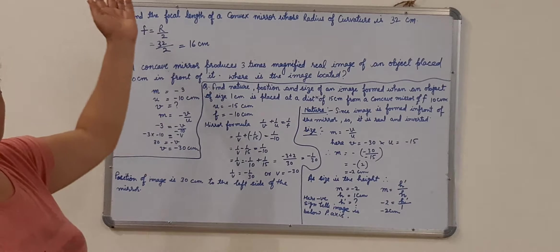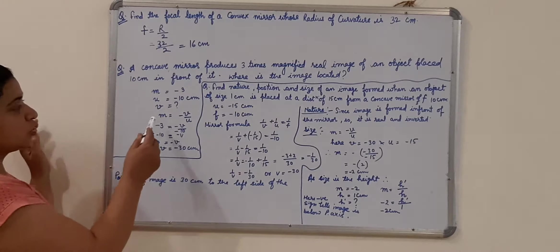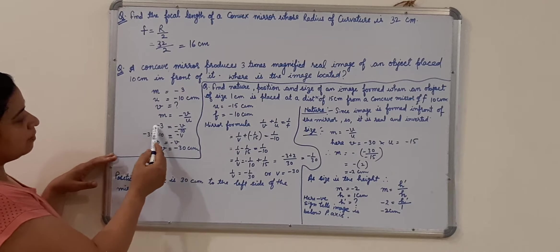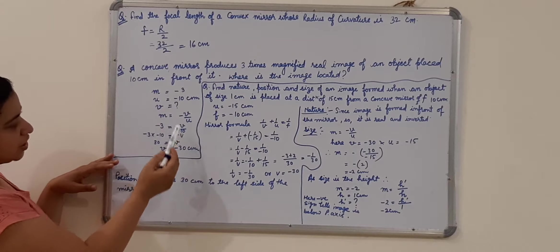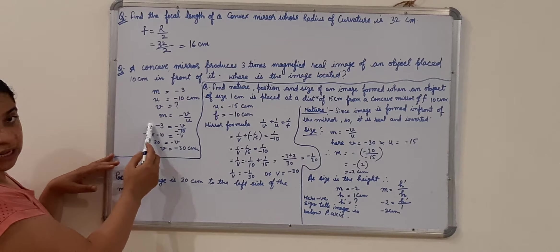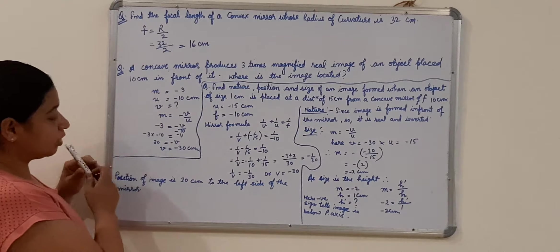So we can use that formula of the magnification M is equals to minus V upon U. So M, put the value in this formula, minus 3 is equals to minus V upon minus 10 because U is minus 10. So I take minus 10 on that side, minus 3 into minus 10 is equals to minus 30, oh sorry, plus 30.